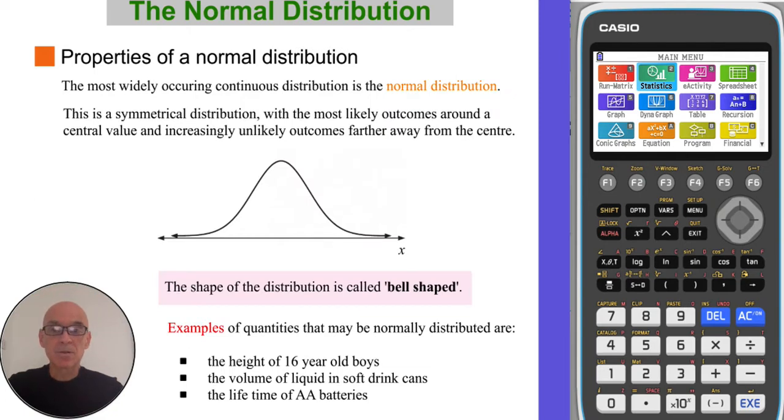The most widely occurring continuous distribution is called the normal distribution. This is a symmetrical distribution with the most likely outcomes around the central value, and increasingly unlikely outcomes further away from the center.